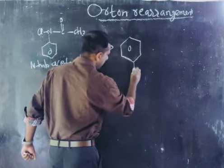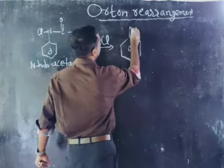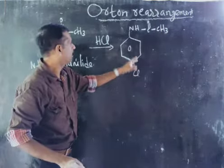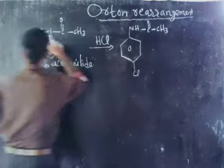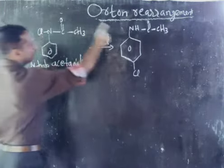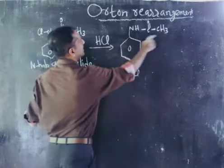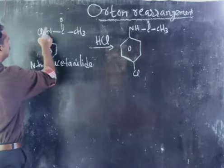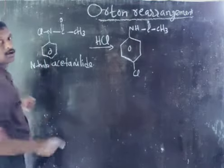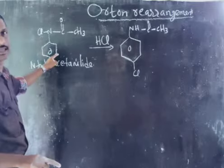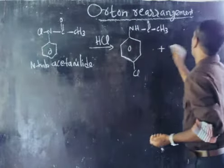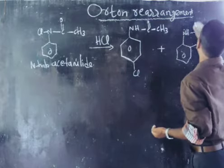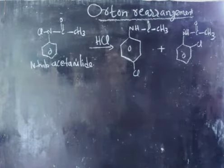This N-haloacetamide will undergo a rearrangement to give para-haloacetamide — that means in the para position, the halogen is placed, giving para-haloacetamide with NHCOCH3. We also get a small amount of ortho-haloacetamide. The halogen is migrating from nitrogen to the nucleus of the ring. This rearrangement is known as the Orton rearrangement.